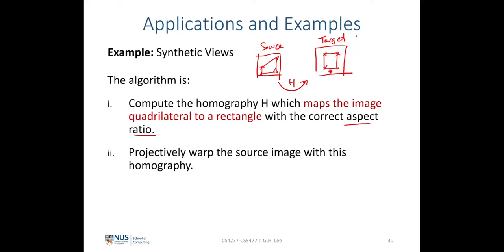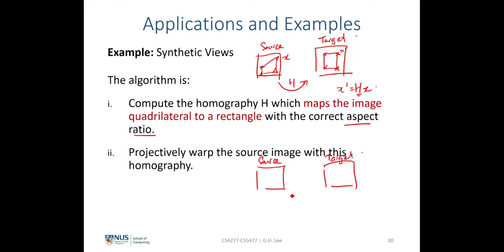We have four point correspondences from the source image to the target image, related by a homography. Every point on the target image is x prime and the corresponding point on the source image is x. We have seen that x prime equals H multiplied by x, and with four such correspondences we can solve for H using the linear method from lecture three. Once H is computed, the relation between the source image and target image is this homography.